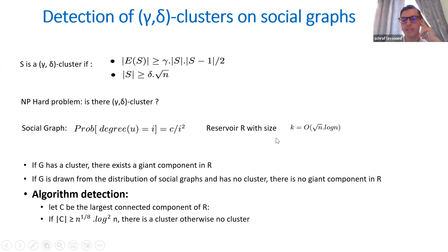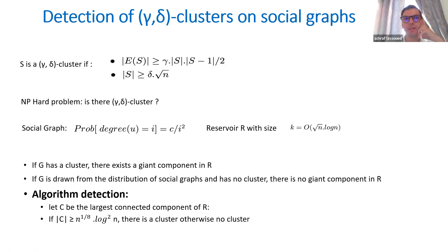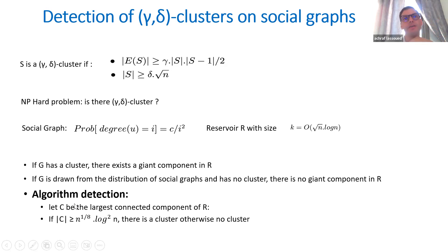We study graphs with a degree distribution where the probability of node degree i is c over i squared. We observe the following: if there is a gamma-delta cluster, there will be a giant component in the reservoir with high probability. If G is taken from a social graph distribution with this degree distribution and has no cluster, then there will be no giant component in the reservoir. The sample detection algorithm simply looks at the size of the largest connected component: if greater than a threshold, there is a cluster; if less, there is no cluster.